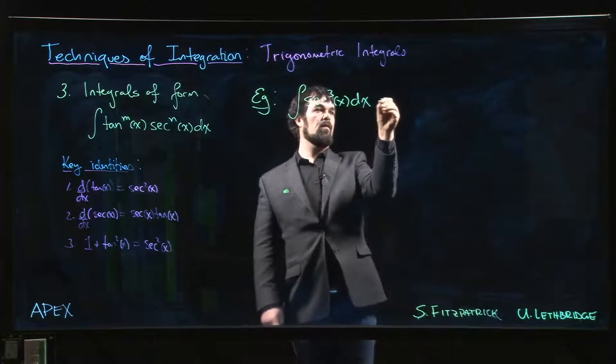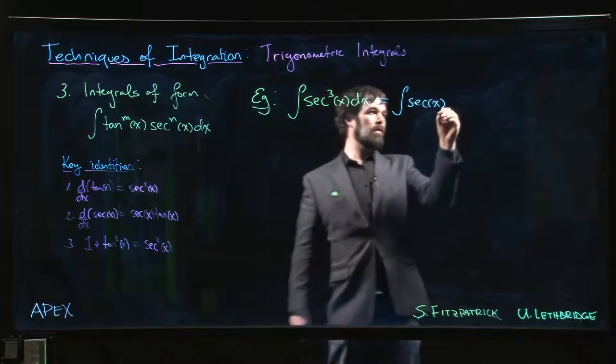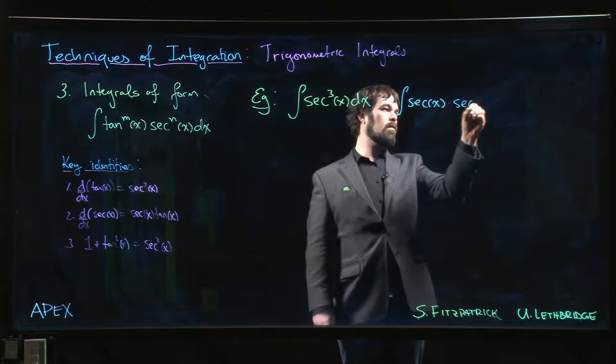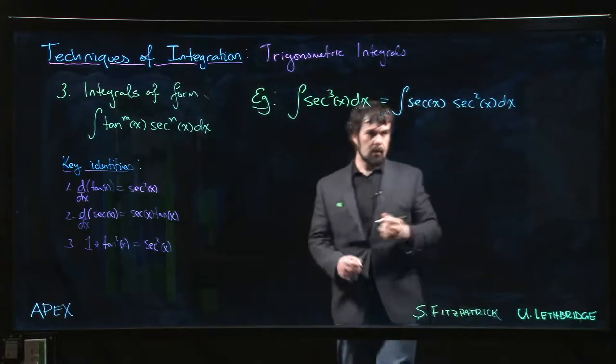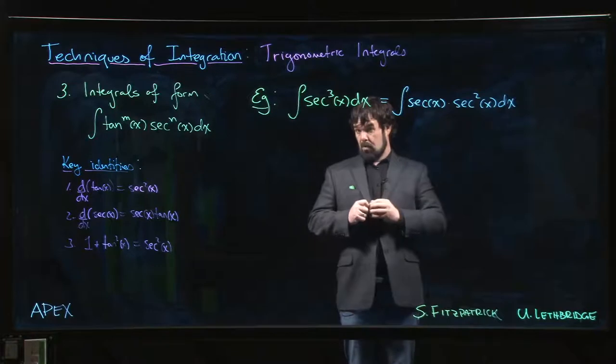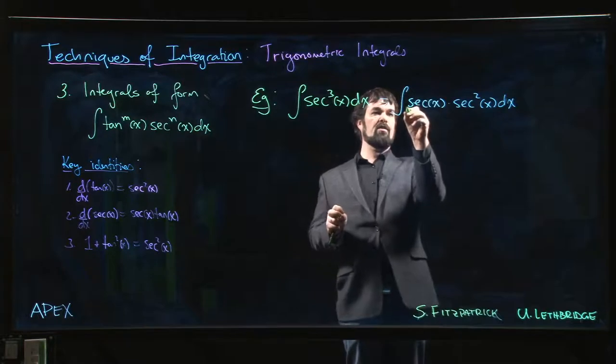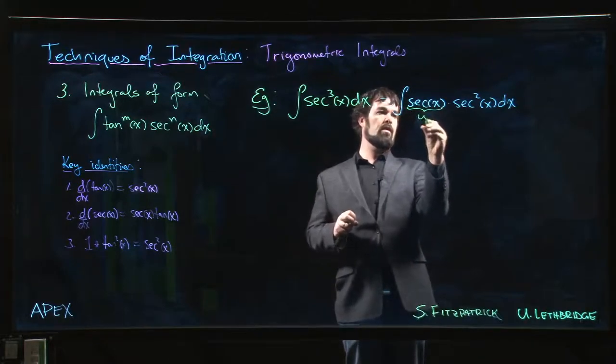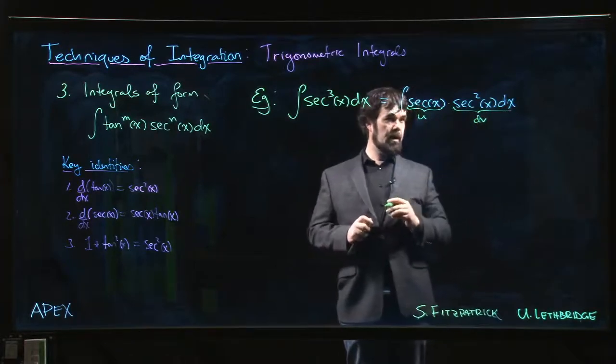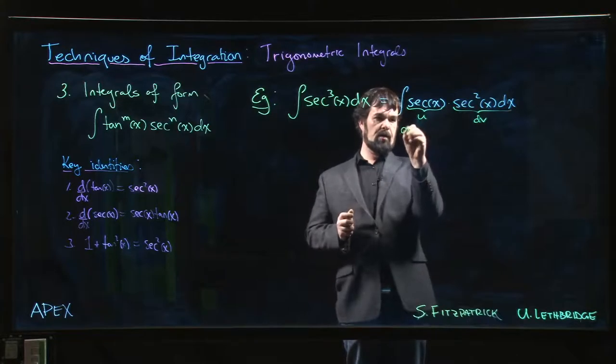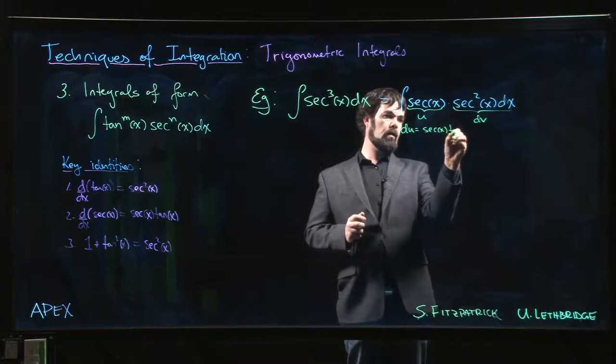First off, we can write this as secant x times secant squared x. We're going to apply integration by parts with the obvious choices. This is going to be my u, that's going to be my dv.